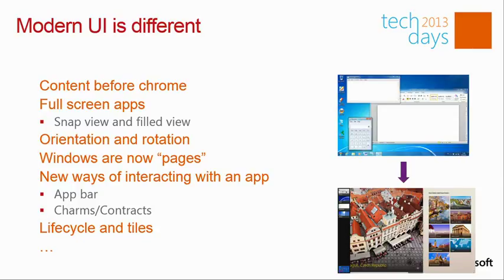Because content is more important than chrome, all controls are bundled in specific locations like the charms bar, contracts, and the application bar. Another new concept is lifecycle — we didn't used to think about the fact that Windows might close the application. Normally it was the user who closed it, but in Windows 8 the operating system actually takes control over the lifecycle of an application. All these things make building Windows 8 applications a bit different.